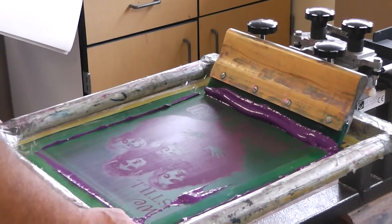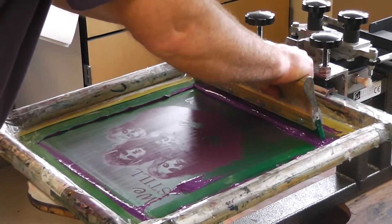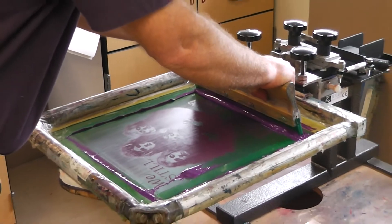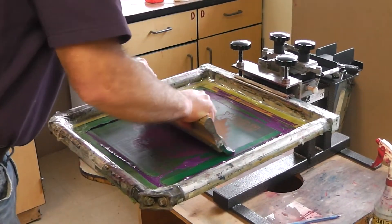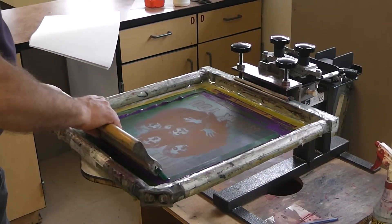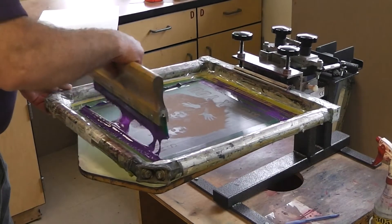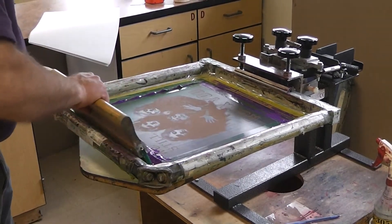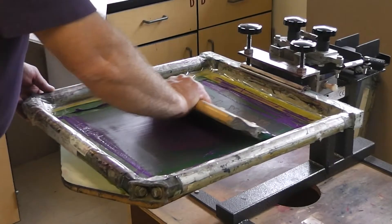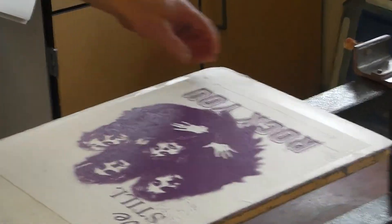Now I'm going to lower the screen and I'm ready to print. I'm going to keep the squeegee at about a 60 to 70 degree angle. Press down firmly. And we're trying to get the print solid in one pass. I'm going to lift the screen up. And now here's where my flood stroke happens. I'm going to just flood the ink back into the stencil, rest the squeegee, and there's our print.